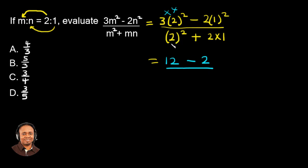Then, at the denominator, we have 2 squared, which is 2 times 2, that is 4, plus 2 times 1, which is 2. So now we're going to have 12 minus 2 at the numerator, and that gives us 10.